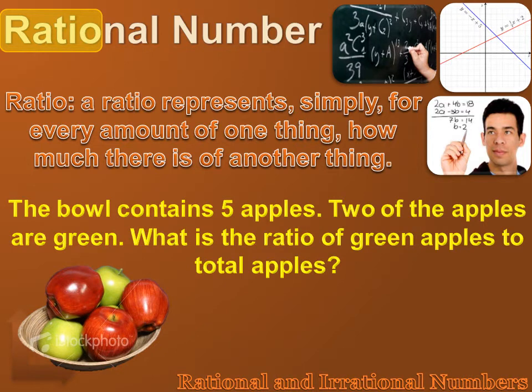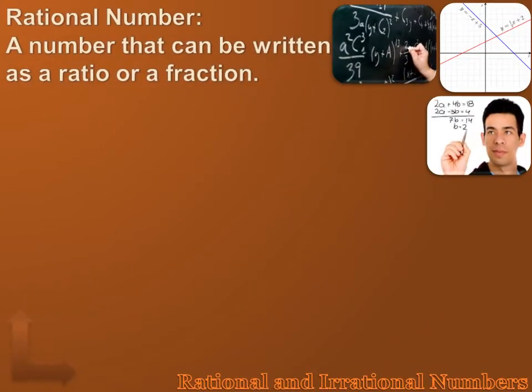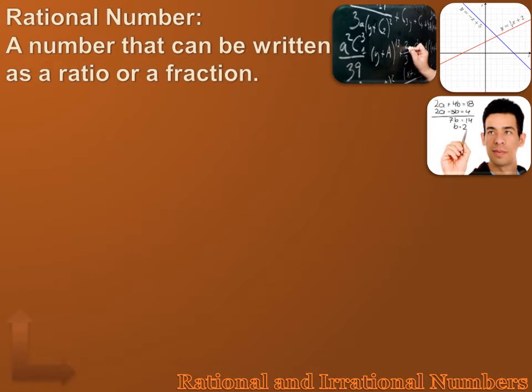For instance, if you had a bowl containing five apples, and two of the apples are green, what's the ratio of green apples to total apples? Well, it's two to five. Well, you know what a ratio is. A rational number is a number that can be written as a ratio or as a fraction.